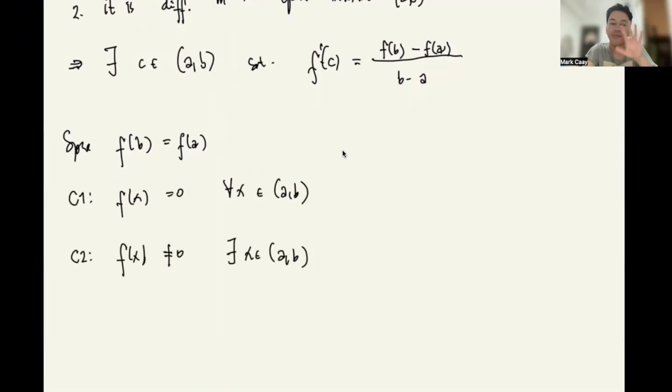For case two, suppose f(x) is non-zero for some x in (a,b). So what's the implication? For the previous video we had the extreme value theorem, which says there is an existence of the absolute extrema. So if f(x) is not zero, by virtue of the extreme value theorem, f attains the absolute maximum or the absolute minimum somewhere in this closed interval [a,b]. So this means if our assumption is f(a) equals f(b) which is zero, then f(x) is not zero for some x in the open interval (a,b).